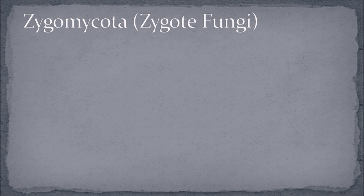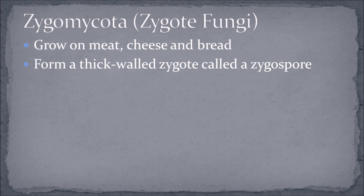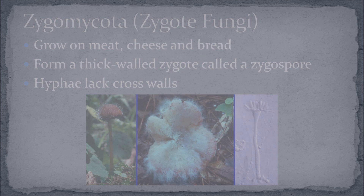The first phylum we're going to talk about is zygomycota, or zygote fungi. These are usually the familiar molds that grow on meat, cheese, and bread. The name comes from the fact that these fungi form a thick-walled zygote called a zygospore during sexual reproduction. The hyphae generally lack cross walls. Rhizopus stolonifer, also known as the black bread mold, is a zygomycete.